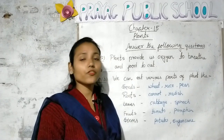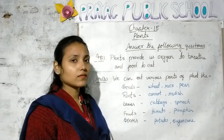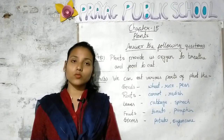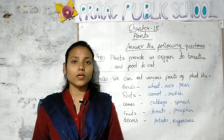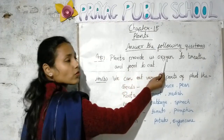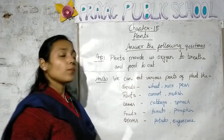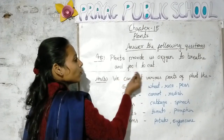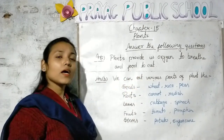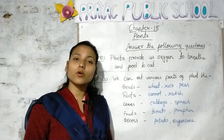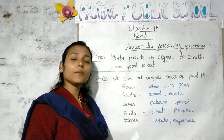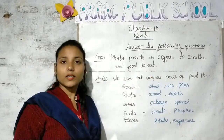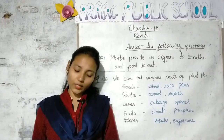We have completed the explanation of this chapter, so today we will do the exercises. Now open your book and see page number 109. Our first question is: How are plants useful to us? Its answer is: Plants provide us oxygen to breathe and food to eat. Plants are very useful for us — not just for us but for all living things. Plants provide oxygen to breathe and food to eat.